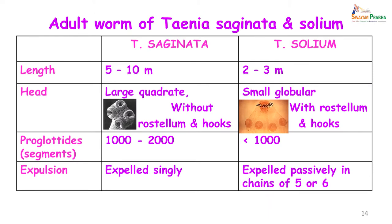Looking at differences between adult worms of Taenia saginata and Taenia solium: length is 5 to 10 meters for saginata and 2 to 3 meters for solium. The head is quadrate in saginata without any rostellum or hooks, whereas in solium it is globular with a rostellum and hooks. The number of proglottids is 1000 to 2000 in Taenia saginata and less than 1000 in Taenia solium. When proglottids are expelled, in Taenia saginata they are passed singly, while in Taenia solium they occur in chains of 5 or 6.